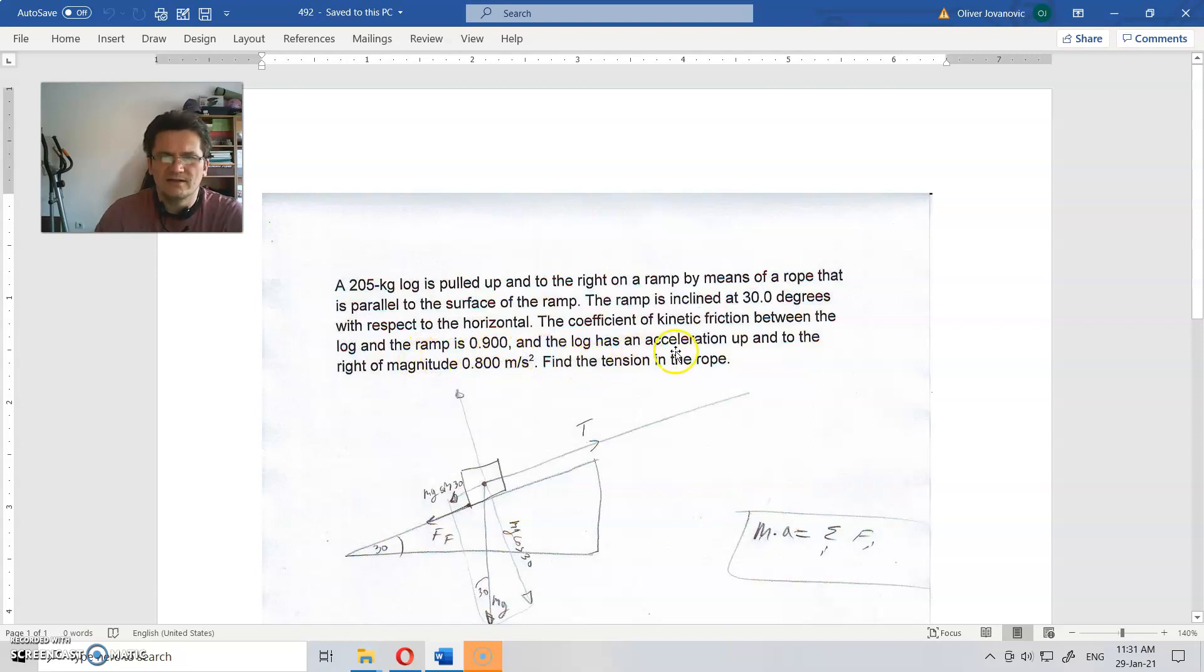The log has an acceleration up the ramp with magnitude 0.8 meters per second squared. Find the tension in the rope. Mass times acceleration, according to Newton's second law, is equal to the sum of all forces in that direction.